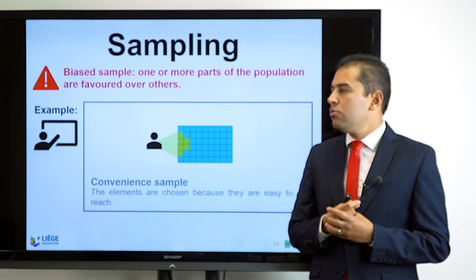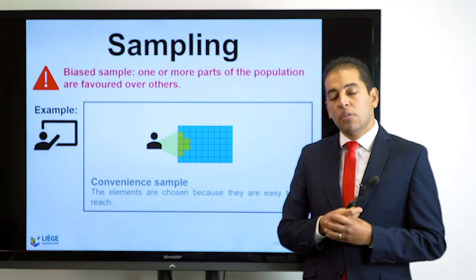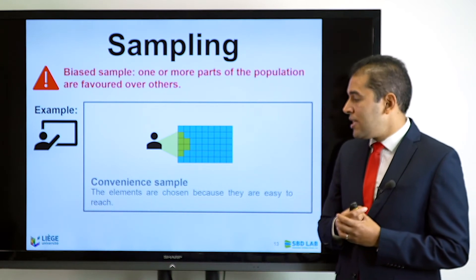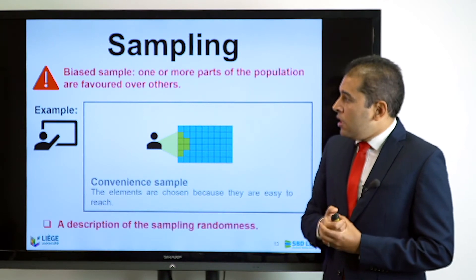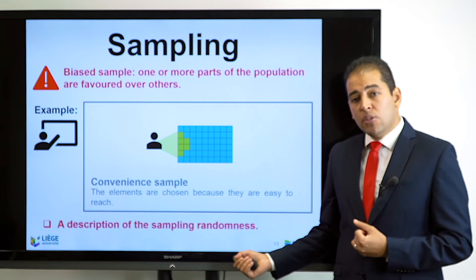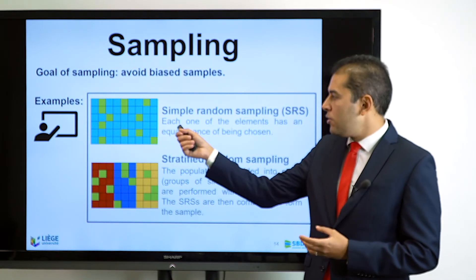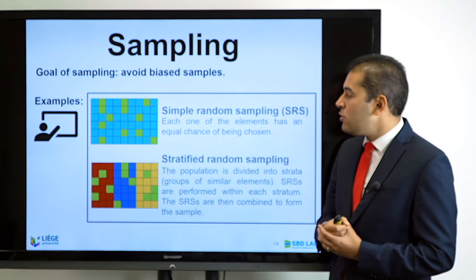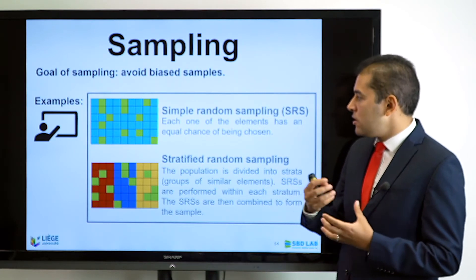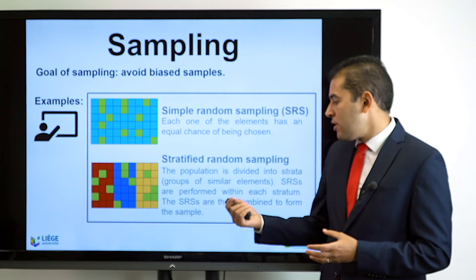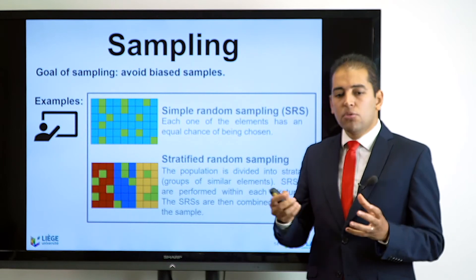In reality, bias sampling often occurs — where one or more parts of the population are favored over others. The most common non-randomized approach is convenience sampling, where elements are chosen because they are easy to reach, depending on the investigator's networking capacity. To avoid this, we describe our sampling randomness. We seek simple random sampling (SRS), where each element has an equal chance of being chosen, and stratified random sampling, where the population is divided into strata of similar elements, with simple random sampling performed within each stratum and then combined to form the final sample.